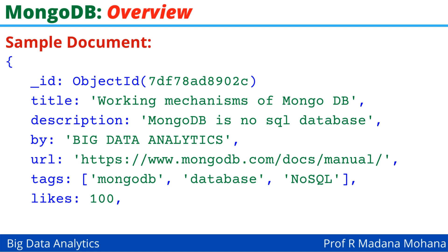Each element follows the key-value pattern with comma separation. _id is a key, title is a key, description is a key, by is a key, url is a key, tags is a key, likes is a key — after the colon comes the value. The tags, for example, include 'mongodb', 'database', 'nosql', etc. For this blog site, let us assume likes: 100.